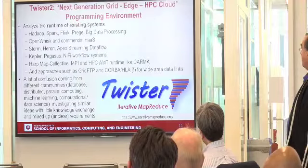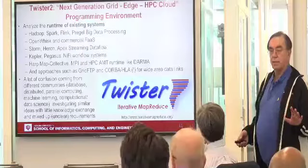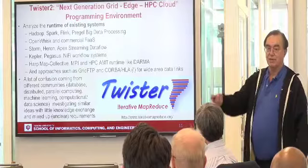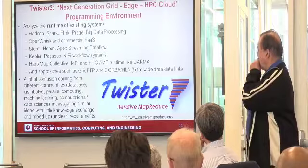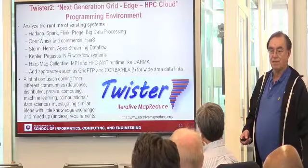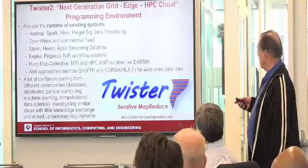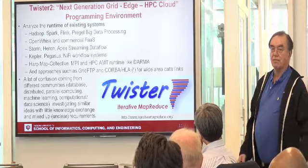The next part of the talk is on Twister 2. Twister was the original system we built in 2010. We looked at all these systems and noticed there were 350 Apache systems, many of them identical — endless systems doing the same thing, because the criterion for Apache software is not that you add something new, but that you have a good community. We propose to solve this by taking the best ideas from all these systems and implementing them as a toolkit you can package together in different ways.